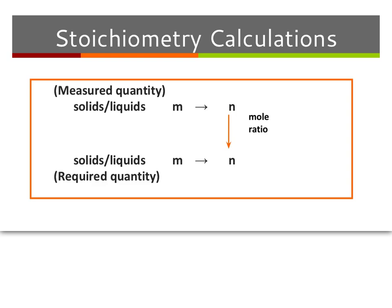Your first step is always a balanced chemical equation. This diagram here is showing your second, third, and fourth steps. After you have your balanced chemical equation, your second step is using your molar mass to find the moles of what you know. Your third step is using your mole ratio to find the moles of your unknown quantity. And your fourth step is using your molar mass again to find the mass of what you don't know.